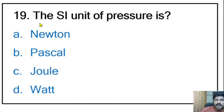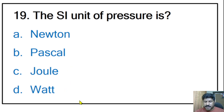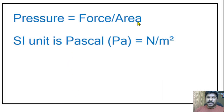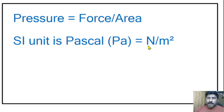Nineteenth question: the SI unit of pressure is Newton, Pascal, Joule, or Watt? The correct answer is Pascal. Pressure equals force divided by area. The SI unit is Pascal, indicated by Pa. One Pascal equals 1 Newton per meter squared.